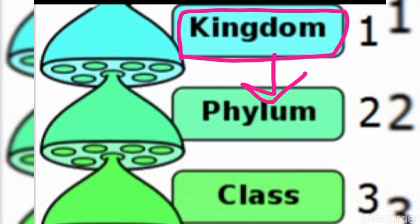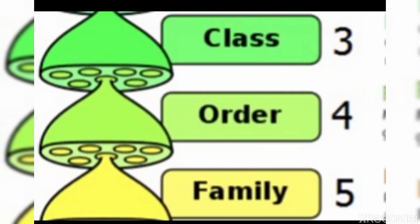Phylum is the singular form; the plural is phyla — P-H-Y-L-A. A phylum or division is divided further into many classes. After class, order will come. A class has a number of orders. Under an order come many families. Organisms belonging to the same family are very similar in structure.